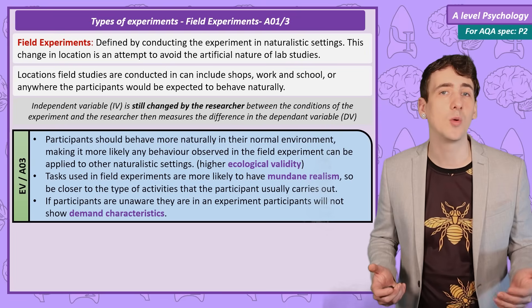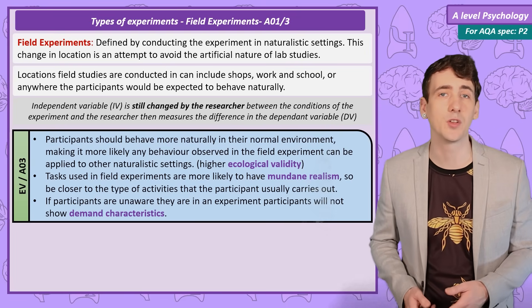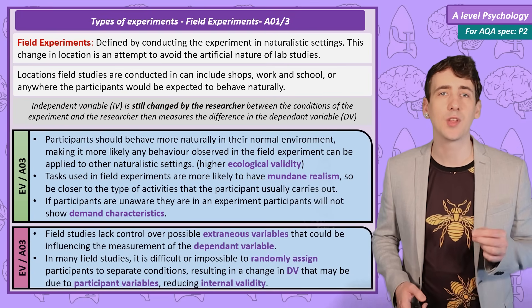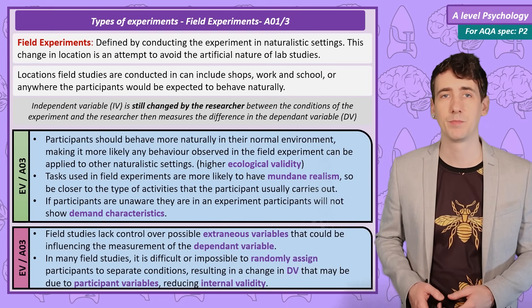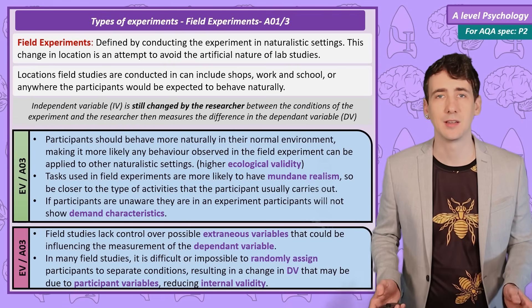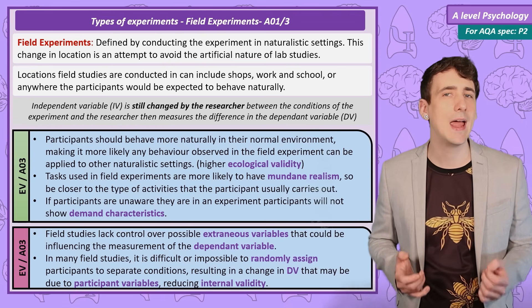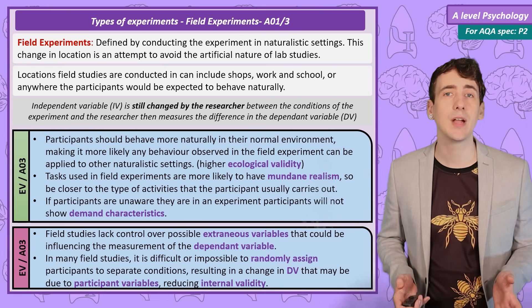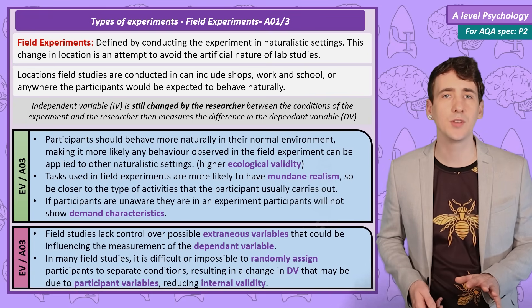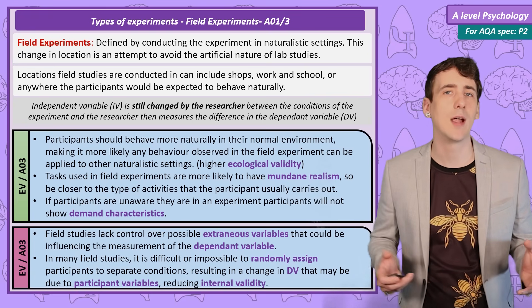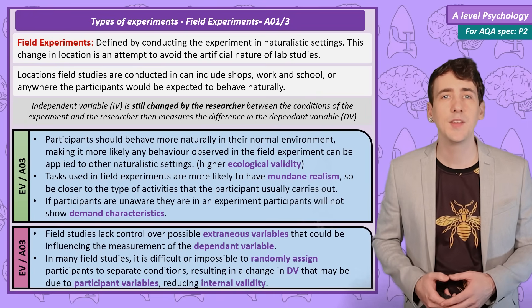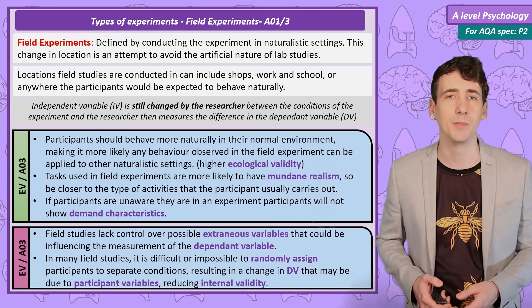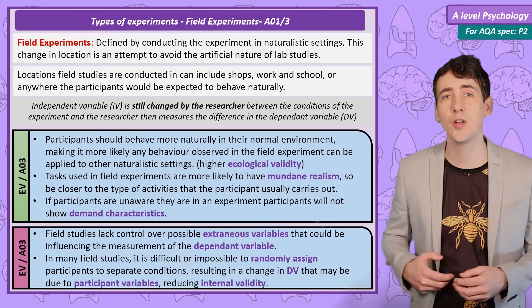If participants are unaware they are taking part in a study — which is easier in a field experiment — demand characteristics are also not a problem. However, the weaknesses are due to the lack of control we had in the lab. The real world is chaotic, and in a field experiment we cannot control every variable that might affect the dependent variable. These are known as extraneous variables, and researchers are often not able to randomly assign participants to each condition. This means any observed effect may be due to a factor other than the independent variable, reducing the internal validity of the experiment.